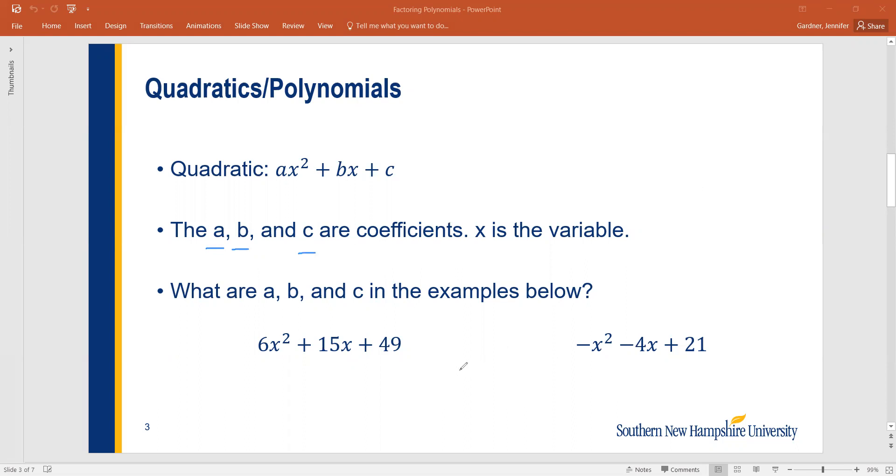I have an example below, a couple examples below. And we're going to look at them and see what are A, B, and C here. So we'll see what A equals, B equals, and C equals for both of these. Now this is a good time to pause and figure out what you think A, B, and C are going to be, and then come back and check and see if you were correct.